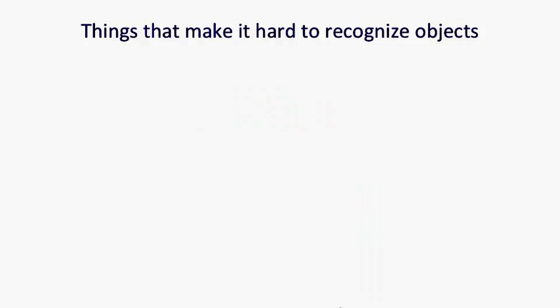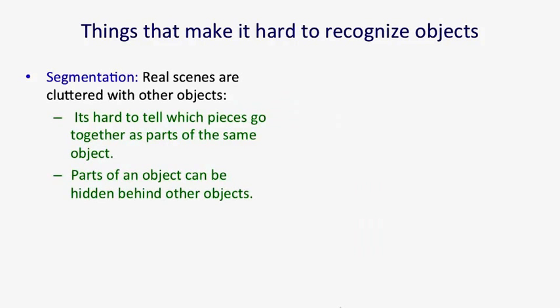There are many reasons why it's hard to recognize objects in images. First of all, it's hard to segment out an object from the other things in an image. In the real world, we move around, and so we have motion cues. We also have two eyes, so we have stereo cues. You don't get those in static images. So it's very hard to tell which pieces go together as parts of the same object. Also, parts of an object can be hidden behind other objects, and so you often don't see the whole of an object. You're so good at doing vision that you don't often notice this.